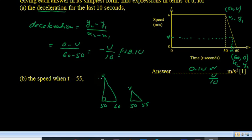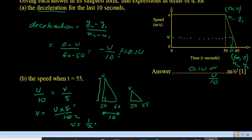So this is u upon 10, the distance is 10 and the speed is v, is equal to v upon 5. 55 minus 50 is 5, so v must be u multiplied by 5 upon 10. So speed must be 1 upon 2 u.